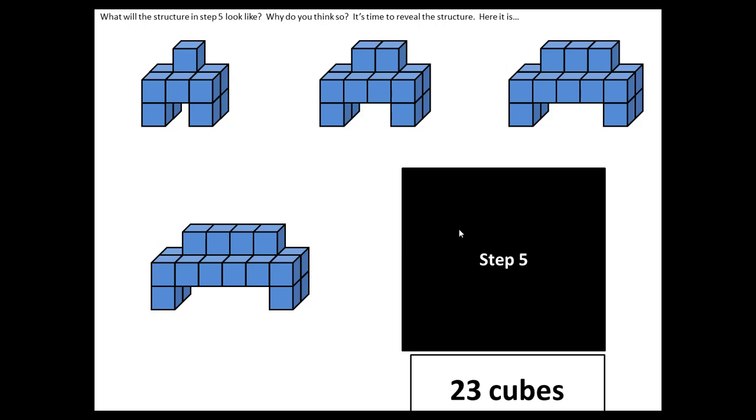And now we know that the number of cubes in step five is 23. However, what we don't know is what that structure will look like. So there's another really good opportunity for students to have conversation here. On the top, you may have noticed that the text changed again, because it does change with every click. And now it says, what will the structure in step five look like? Why do you think so? It's time to reveal the structure. Here it is.